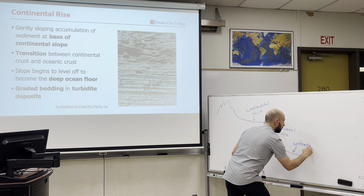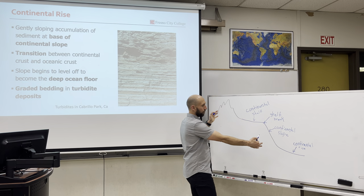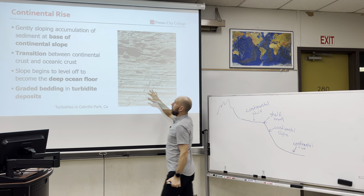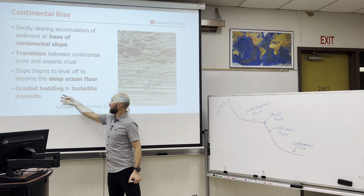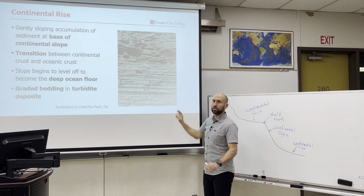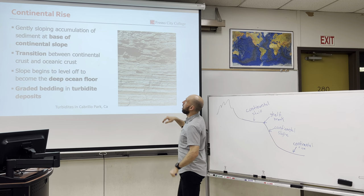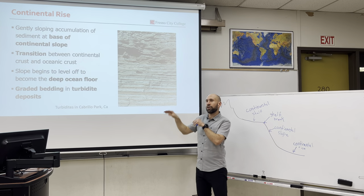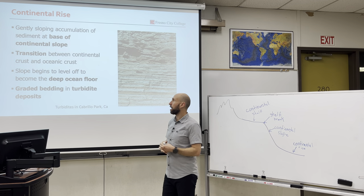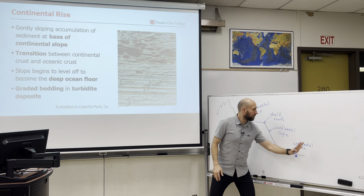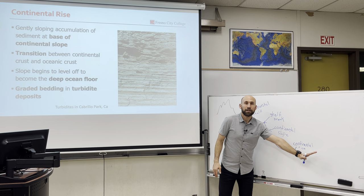The continental rise is the transition between our continental margin and deep ocean basin. We get deposits here called turbidite deposits or graded bedding, where you have alternating grain sizes. It's also the transition between oceanic crust and continental crust. Beyond the continental rise, we get the deep ocean basin.